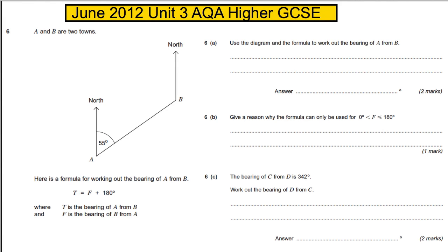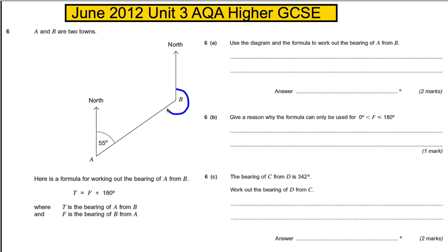Here's a question on bearings. Students did find this difficult in the exam, but just remember everything you know about bearings, keep your head clear, and it will be fine. You have two towns A and B, and here is a formula for working out the bearing of A from B — basically it's giving you a formula for working out this bearing.